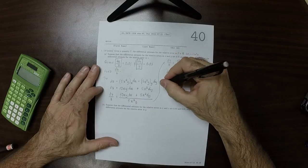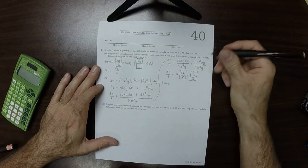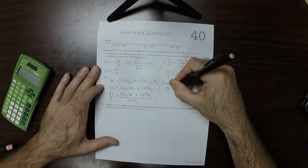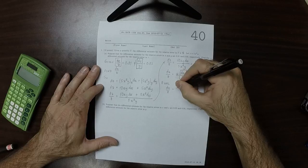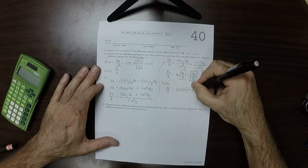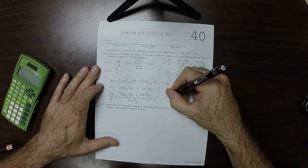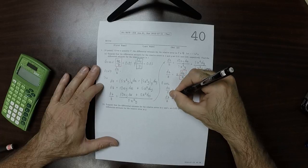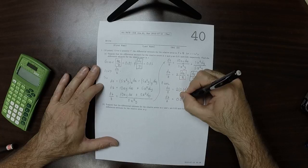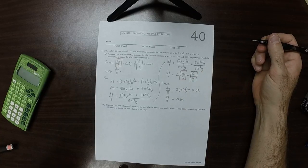So then now we'll evaluate at the point requested. So dz over z is 2 multiplied by 0.01 plus 0.03. So dz over z is 0.05.